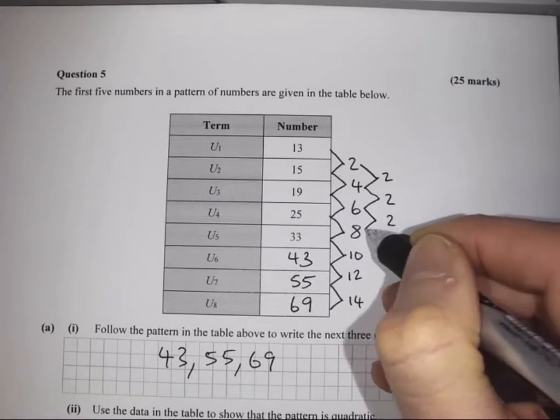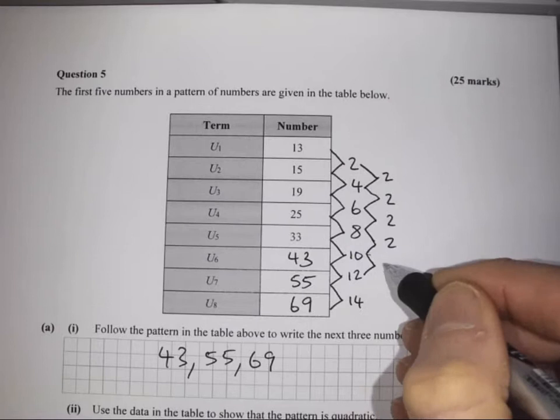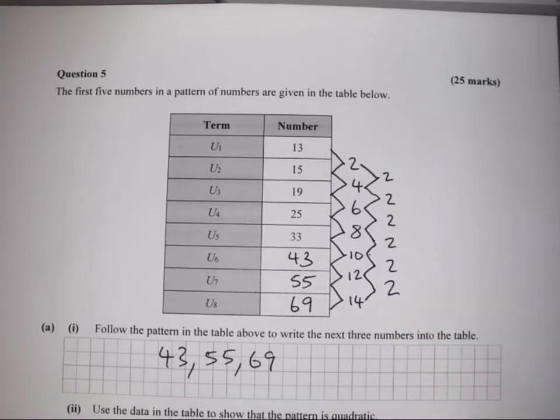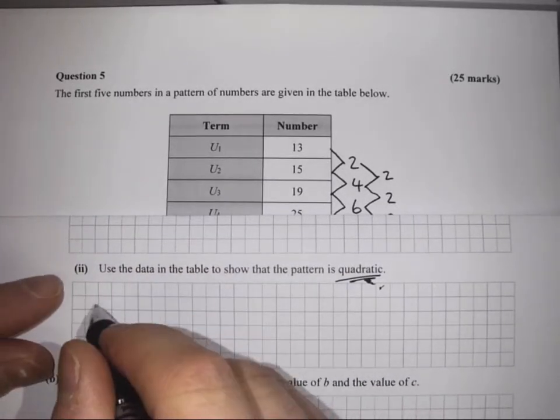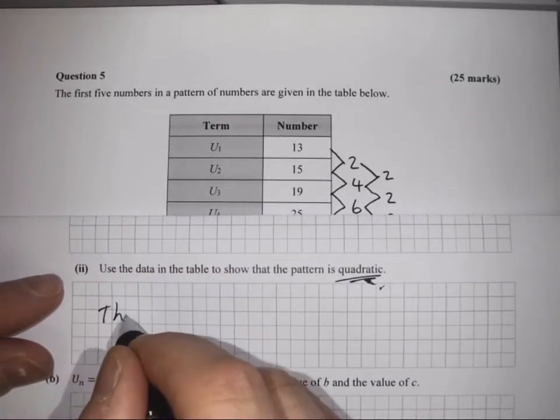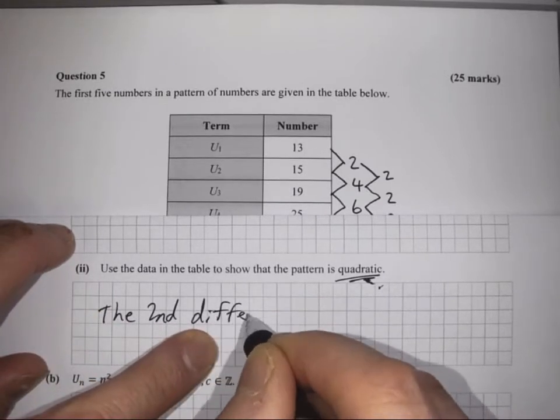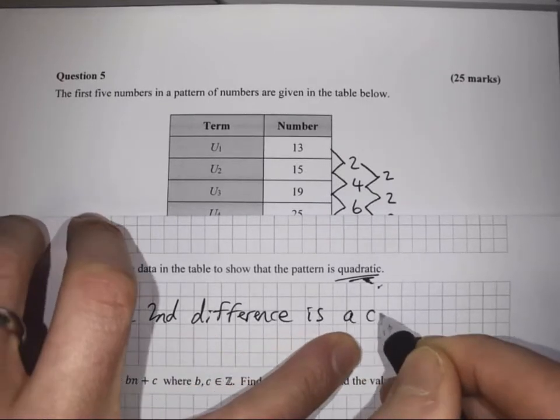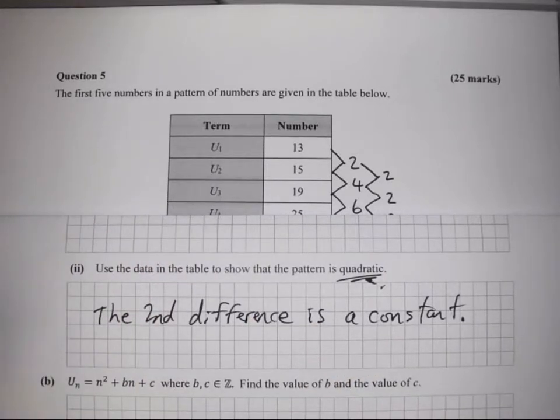4 take away 2 is 2, 6 take away 4 is 2, 8 take away 6 is 2, 10 take away 8 is 2, 12 take away 10 is 2, and 14 take away 12 is 2. So we have shown that the second difference is a constant number. It doesn't change, so that's all you need to show to demonstrate that the pattern is quadratic.